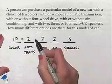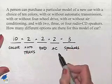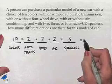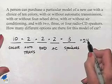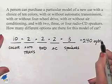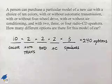We now use the multiplication property of counting, and we are going to multiply these values together. The result is 240, and so we end up with 240 different options for this particular model.